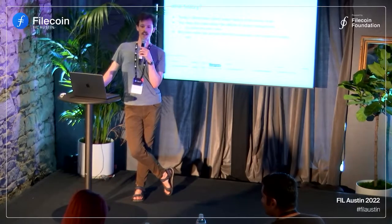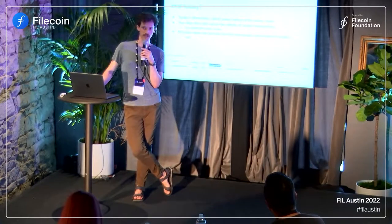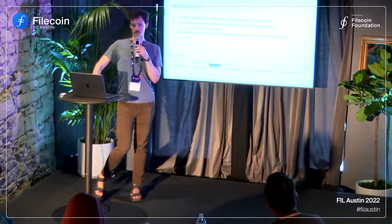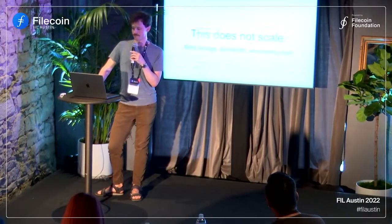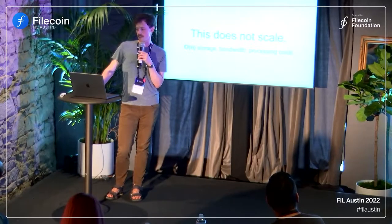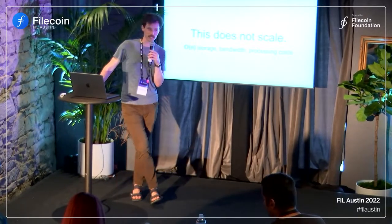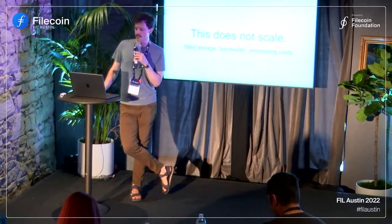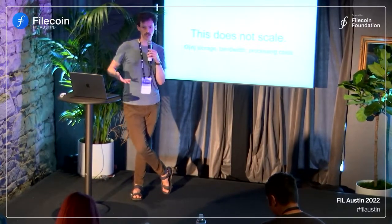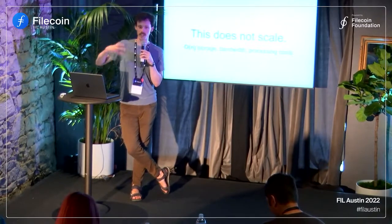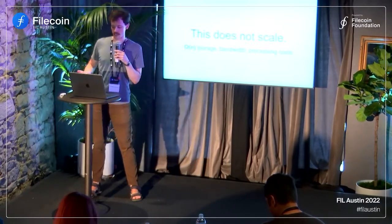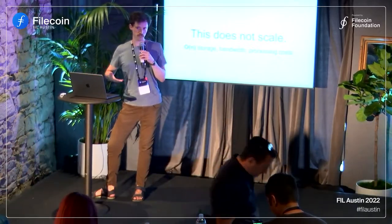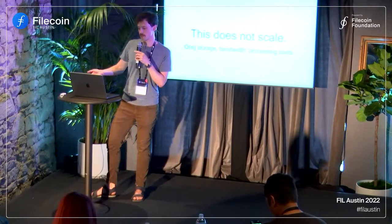You care a lot about the DEX trade you just made or the Filecoin deal you just closed, but not so much about the ones you did five years ago. A little bit of what this means is that this process where you keep all the history just doesn't scale. It implies a linear cost in storage, bandwidth, processing — just overhead you always have to carry for all time. So the question is, if we want to make more sustainable blockchains and the client software that runs them, how do we do this?